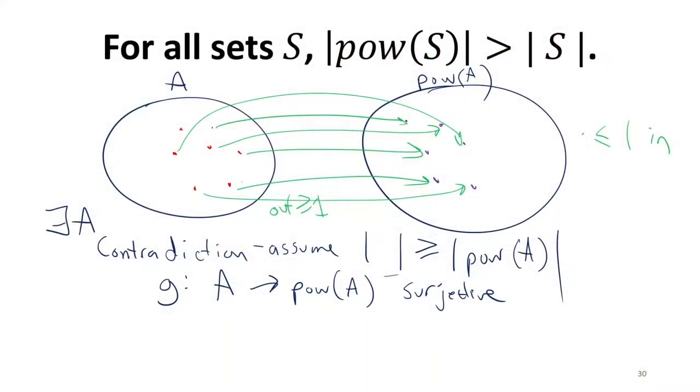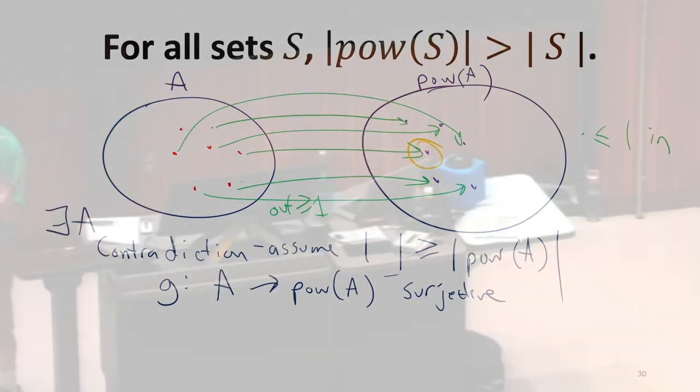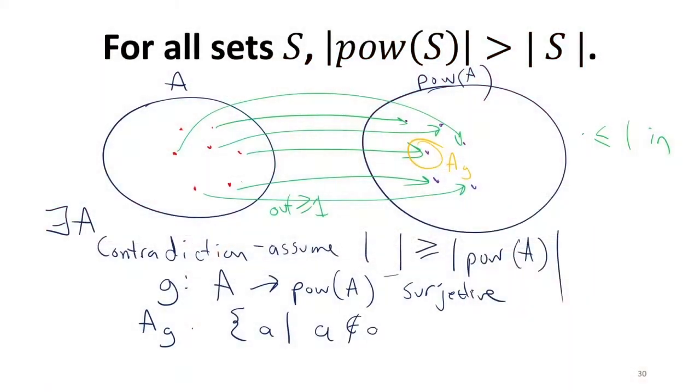Now we've got to do what's the real clever trick that Cantor came up with. We're going to have some set. There's some element of the power set. Everything in the power set is a set, and we'll call that AG. And we'll define that set as the set of all elements of A that are not elements of the set that the surjective function G maps to.